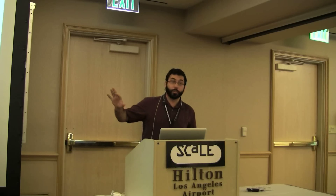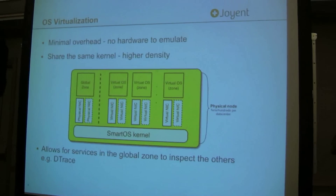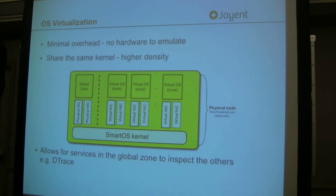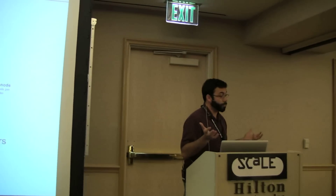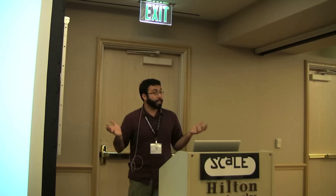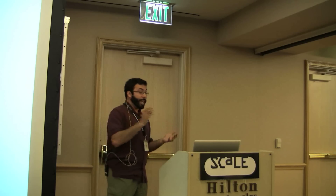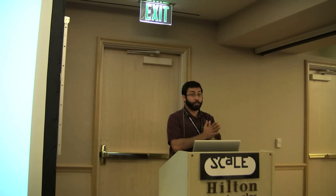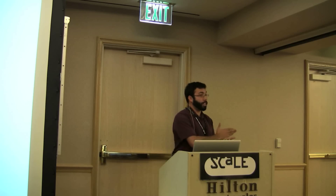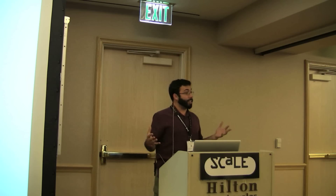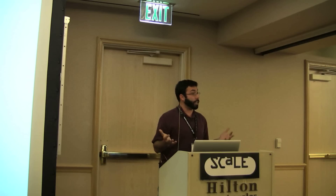To further explain OS virtualization: unlike hardware virtualization, where you have to emulate all the hardware, timers, disk, and networking, with OS virtualization you don't need to do that. All you do is share the same actual kernel — the notion of these containers is built into the operating system as a first-class citizen. This means agents in the global zone can actually see into the others. For example, if you want to use DTrace to understand performance, the global zone can see performance across all of them.